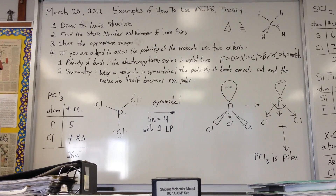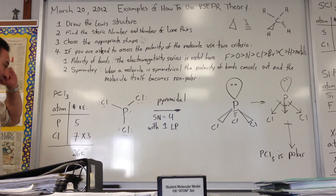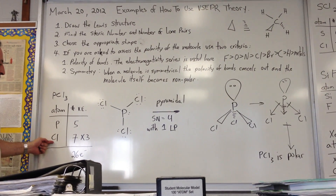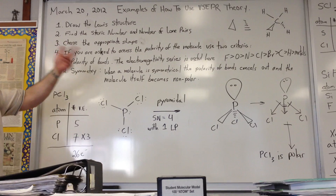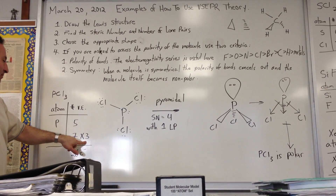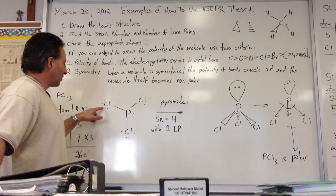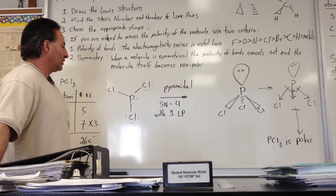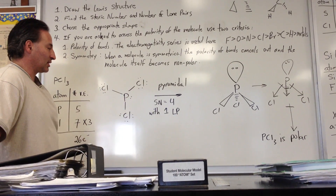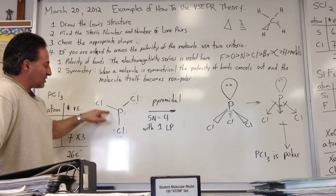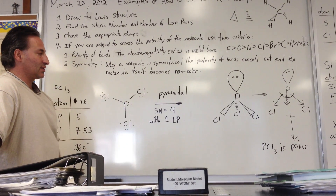The first example is PCl₃. Phosphorus is a group 15 element with five valence electrons. Chlorine is group 17 with seven valence electrons each. With three chlorine atoms, the total is 26 electrons. In the Lewis structure, each chlorine has six valence electrons as lone pairs, and each bond counts for two — 18 plus 6 plus 2 equals 26 electrons accounted for. This molecule has a steric number of four: three bonding groups plus one lone pair, which tells us it's a pyramidal shape.